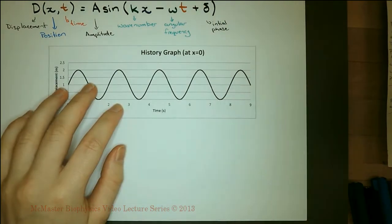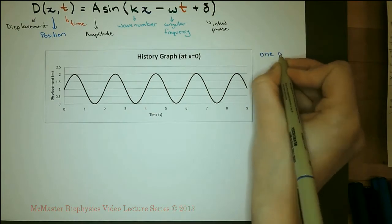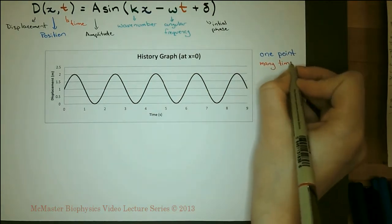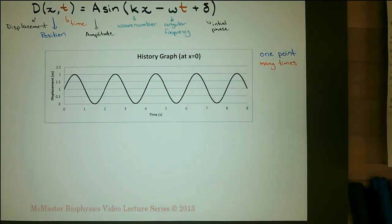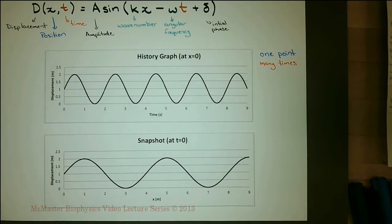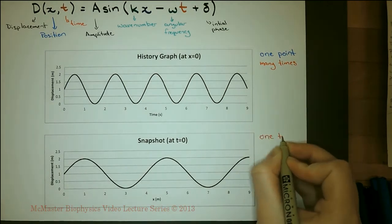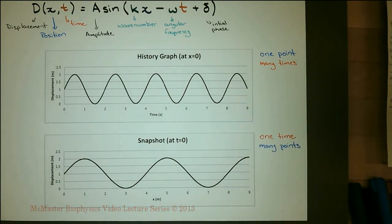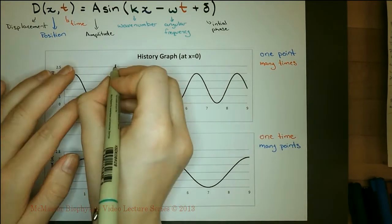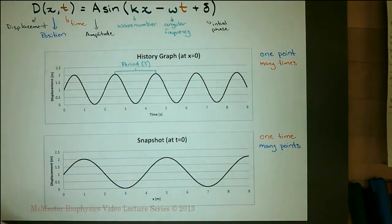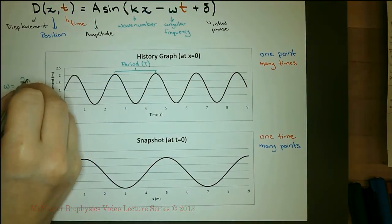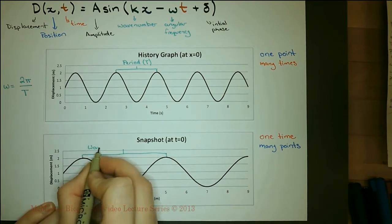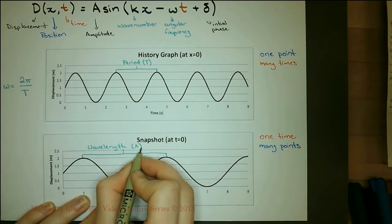The motion of the wave can be viewed at one point over time — a history graph. It could also be viewed at one time over an area; this is called a snapshot. If you need the period or the angular frequency, use the history graph. To get the wavelength and the wave number, use the snapshot.